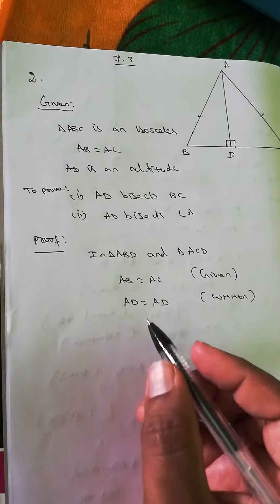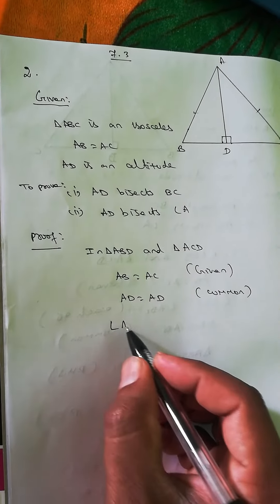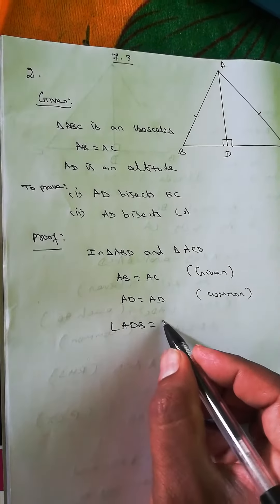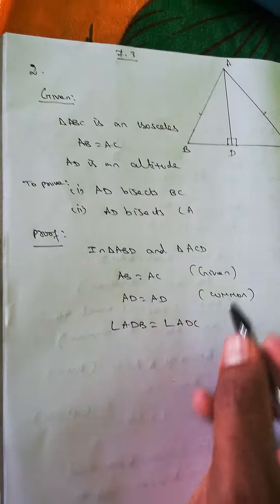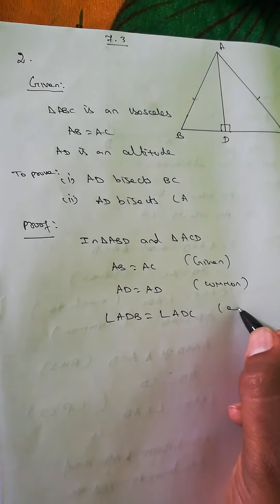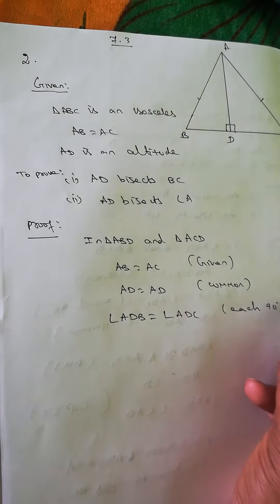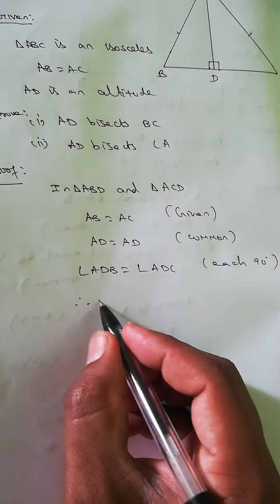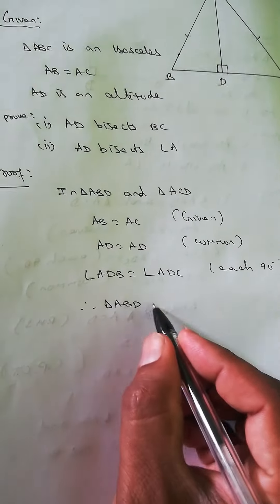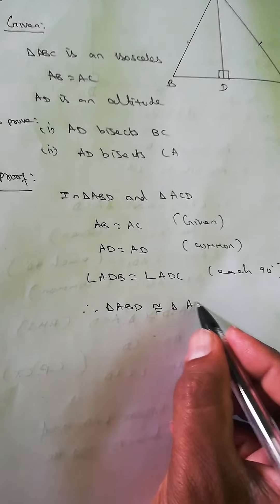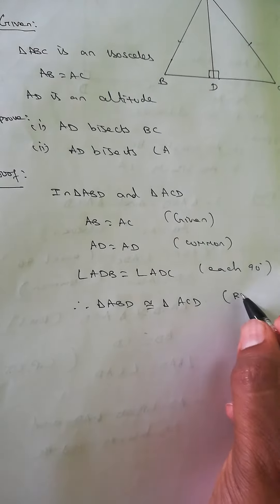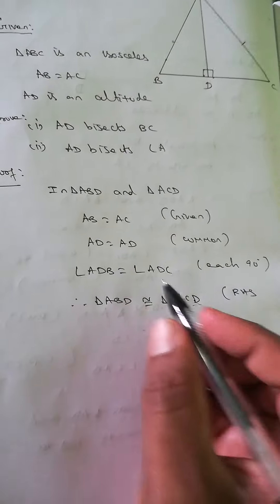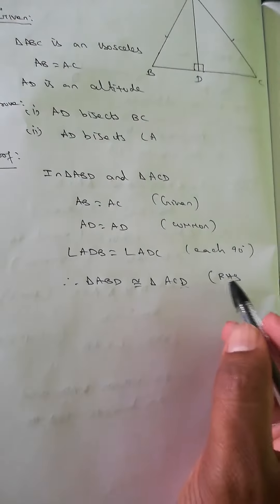AD is common, and angle ADB equals angle ADC, both each 90 degrees. Therefore, we can say triangle ABD is congruent to triangle ACD by RHS rule, because this is a right angle.